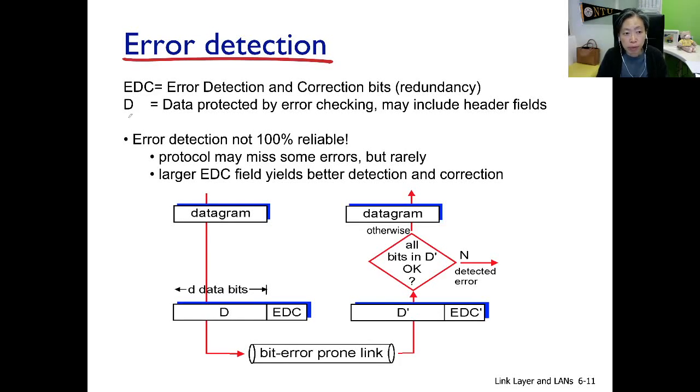The error detection scheme works this way. We take the original data and pass it through a coding scheme called the EDC codecs. And as a result, we generate these EDC bits. So it's illustrated here. Take the data, pass it through the codecs, generate the EDC bits.